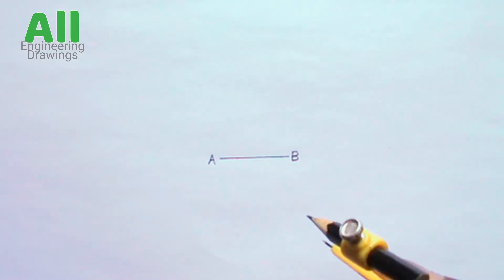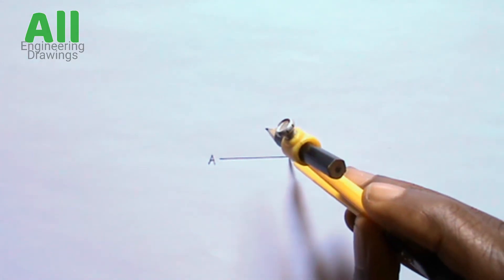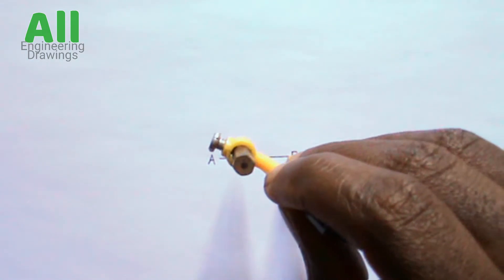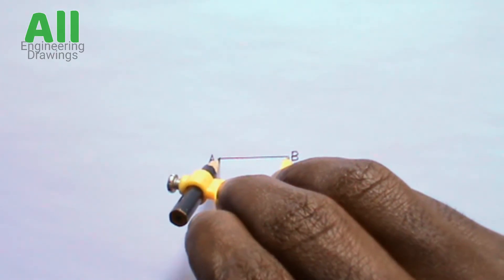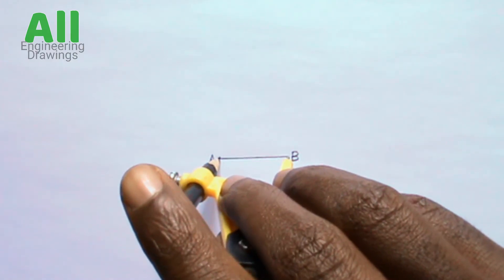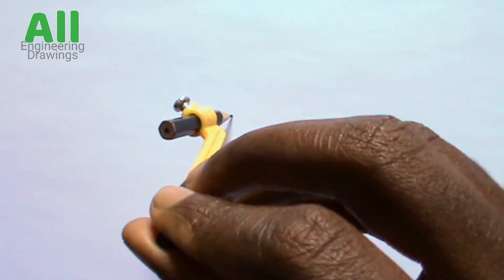You have to place your compass on one end of the line, then extend your compass in such a way that your pencil is on the other end of the line. Then draw a circle.